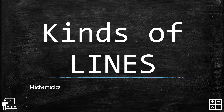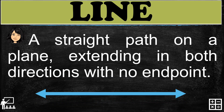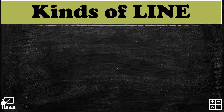This video lesson is about kinds of lines. A line is a straight path on a plane extending in both directions with no endpoint. The indicators for the extending directions are the arrows on both sides.